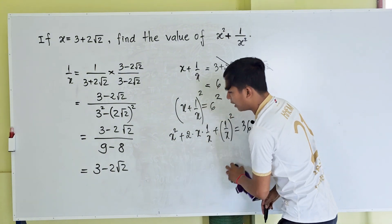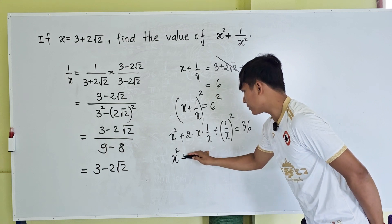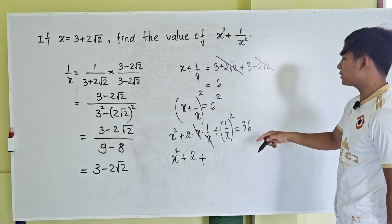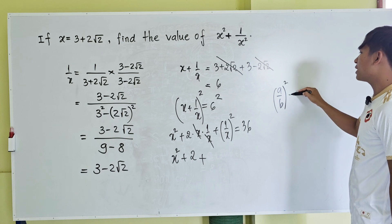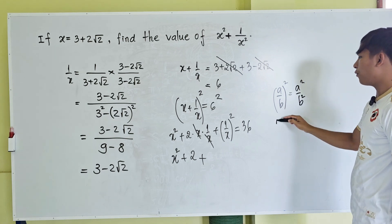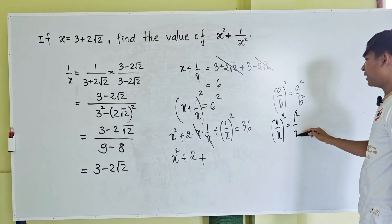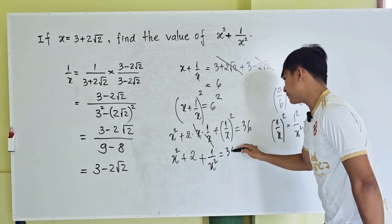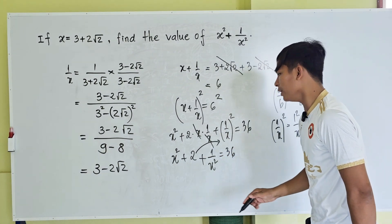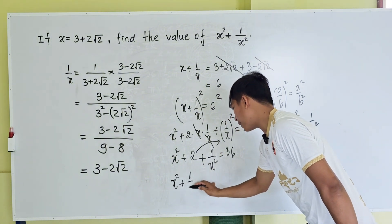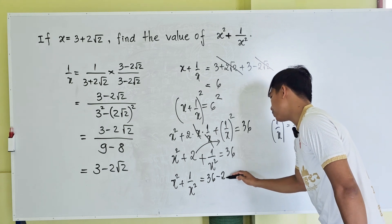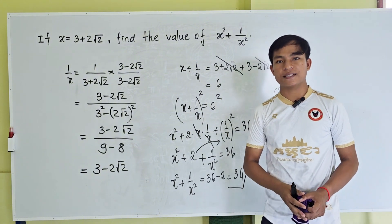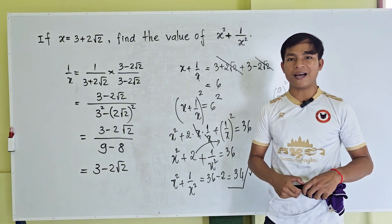We simplify: x squared plus 2 plus 1 divided by x squared equals 36, using the formula that (1 divided by x) squared equals 1 divided by x squared. Then we move the 2 to the right-hand side: x squared plus 1 divided by x squared equals 36 minus 2, which equals 34. That is the value of our expression. Thank you for watching — if you like my video please don't forget to subscribe to my channel for more exciting videos. Goodbye, see you next video!